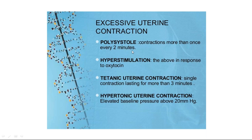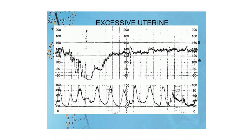These terminologies for excessive uterine contractions — polysystole, hyperstimulation, tetanic uterine contractions, and hypertonic uterine contractions — may or may not be associated with fetal heart abnormalities, depending on fetal reserve and how much the fetus can withstand hypoxia. Looking at the CTG graph, in 10 minutes you can see seven contractions — so you can make out whether the patient is having normal uterine contractions or hyperstimulation. This is excessive uterine contraction: polysystole if spontaneous labor, hyperstimulation if augmented labor.